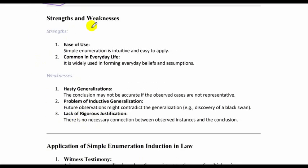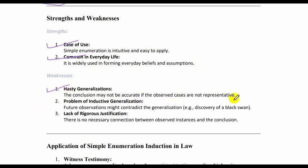Strengths and weaknesses of simple enumeration: Strengths include ease of use — it is intuitive and easy to apply — and it is common in everyday life, widely used in forming everyday beliefs and assumptions. Scientific observations are based on inductive reasoning. Weaknesses include hasty generalization — conclusions may not be accurate if the observed cases are not representative. There is also the problem of inductive generalization: future observations might contradict the generalization, as in the discovery of a black swan. Additionally, there is a lack of rigorous justification — no necessary connection exists between observed instances and the conclusion, because it is probabilistic.